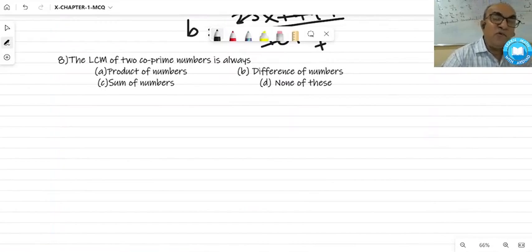Question number 8. The LCM of 2 co-prime numbers is always equal to their product. If the numbers are co-prime, means no common factor other than 1, so their product will be the LCM.